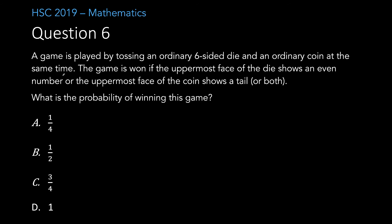Question 6. A game is played by tossing an ordinary six sided die and an ordinary coin at the same time. The game is won if the uppermost face of the die shows an even number or the uppermost face of the coin shows a tail or both. What is the probability of winning this game? The probability of winning is simply 1 minus the probability of losing. The probability of losing is the probability of my odd numbers times the probability of heads. That's 1 minus a half times a half which gives me 3 quarters. So your answer is C.